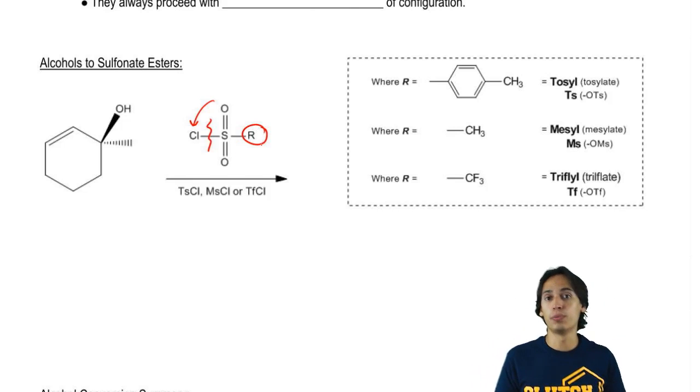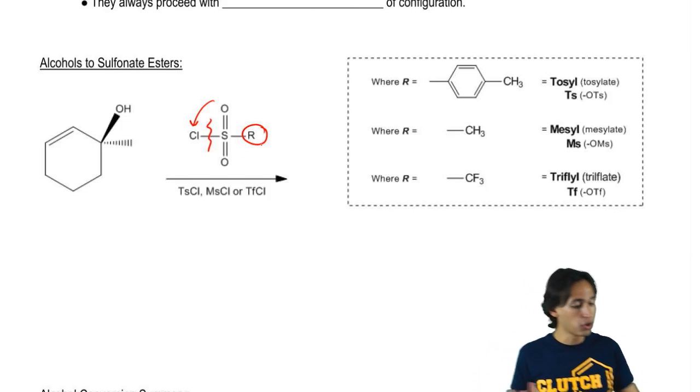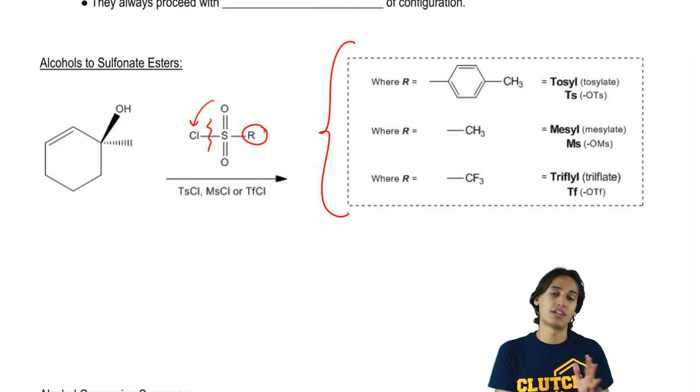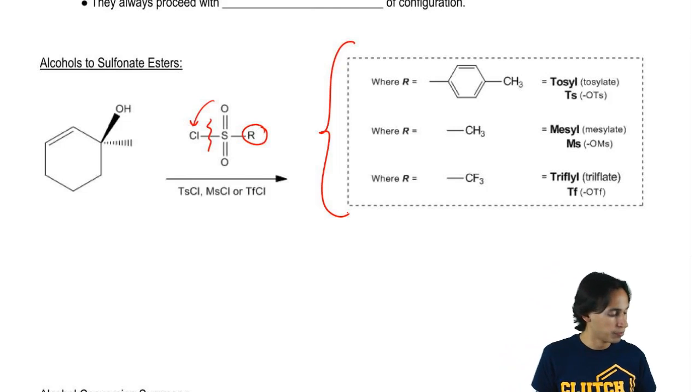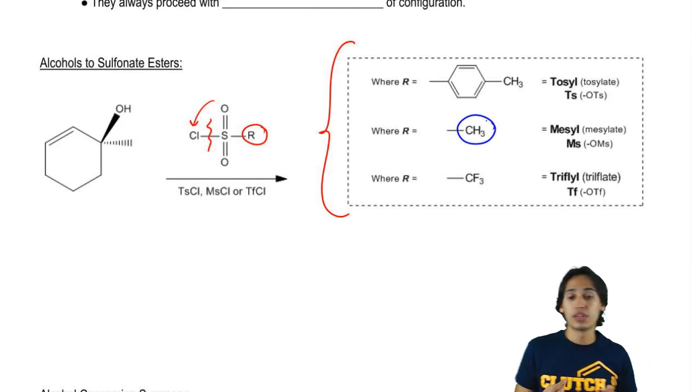Now the identity of the R group is just going to change the name of the sulfonate ester. In general, all of these different molecules can be categorized as sulfonate esters, but they do get individual names. For example, the easiest situation would just be what if it's just a methyl group? Well, then that's called a mesyl or a mesylate sulfonate ester, a mesylate.